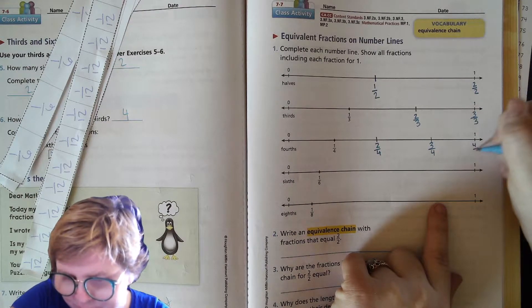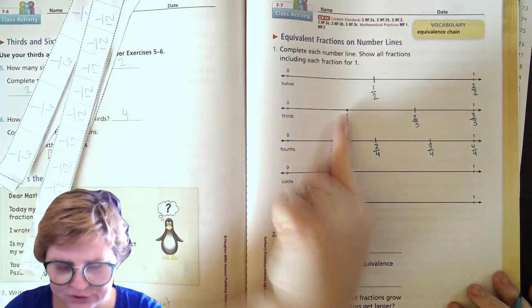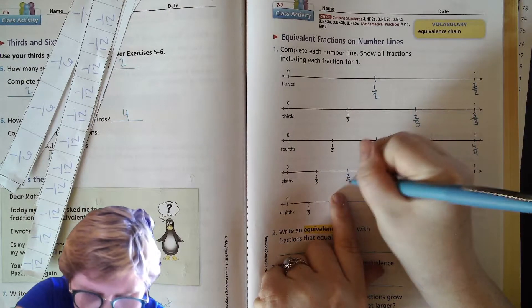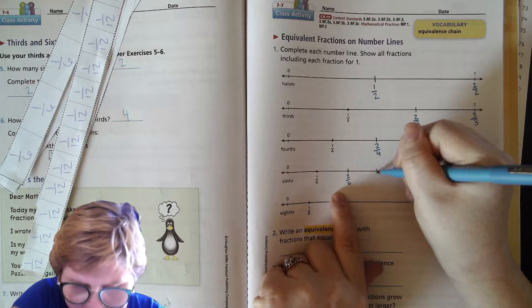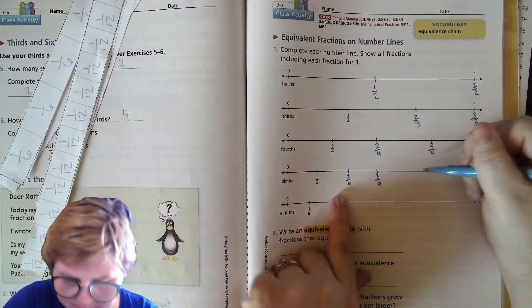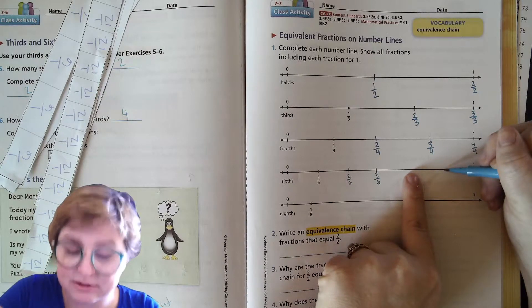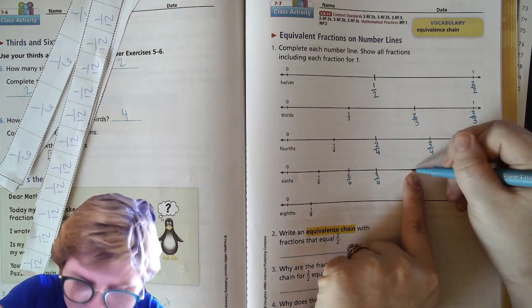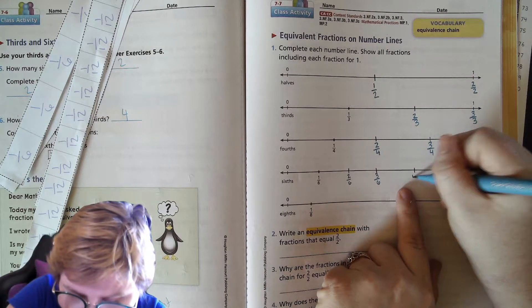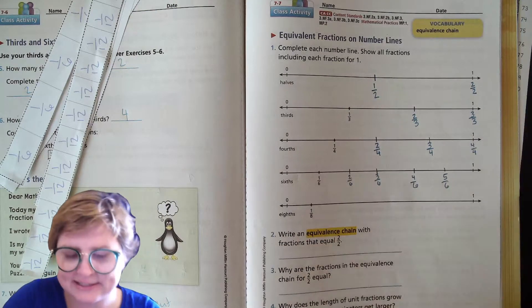Sixths. I know two-sixths is going to be right underneath that one-third line. Three-sixths is going to be right underneath the half. Four-sixths is going to be about here and five-sixths is going to be about here. I'm going to kind of visually space them out just to make sure I'm not making one extra small. Actually, four-sixths is going to be underneath the two-thirds line, so four-sixths, five-sixths, and then six-sixths right there.